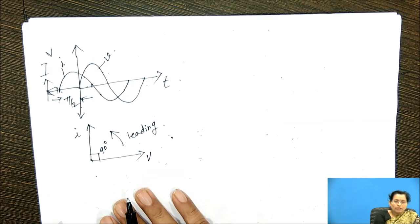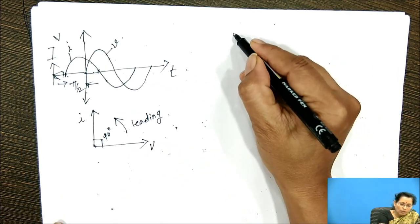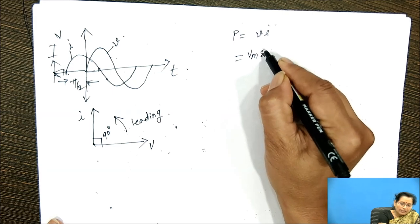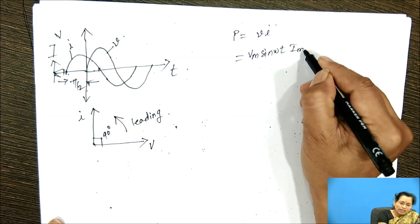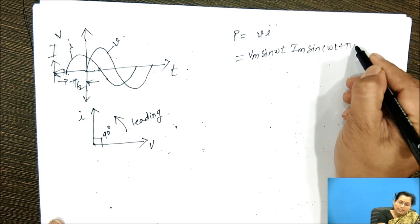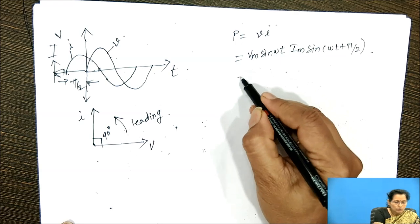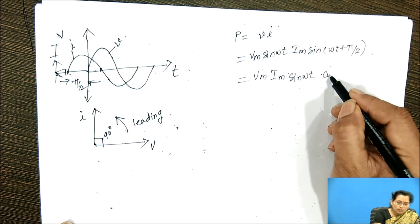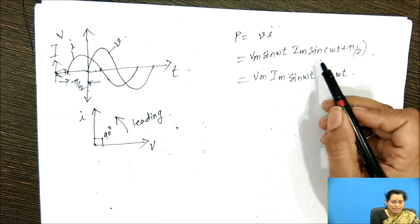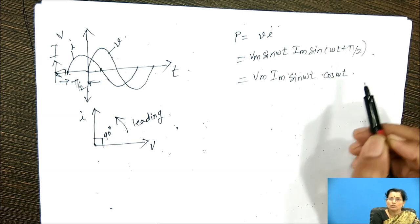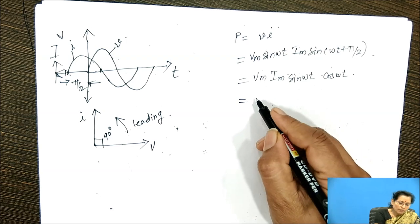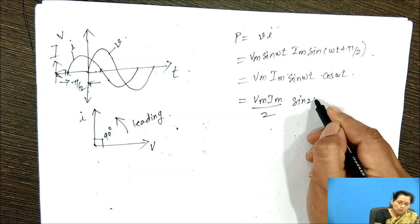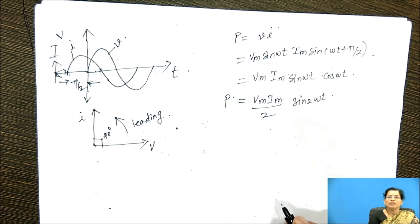Now we can calculate the instantaneous power for this circuit. P equals V into I, where V is Vm sin omega t and I is Im sin(omega t + pi/2). Since sin(omega t + pi/2) equals cos omega t, we get P equal to Vm Im sin omega t cos omega t, which using the double angle formula gives (Vm Im / 2) sin 2 omega t. This is the power equation for this circuit.